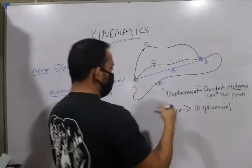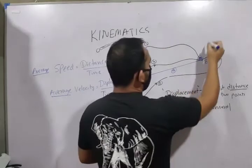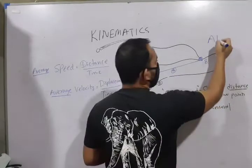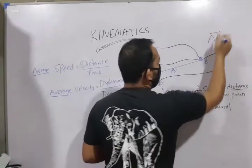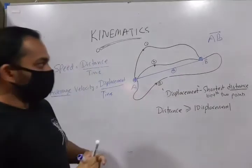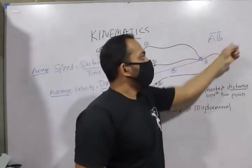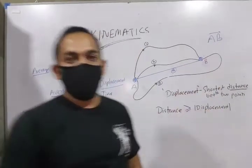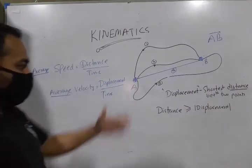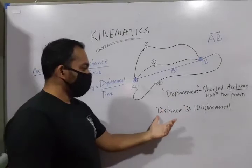Now, this displacement can be written in this way. If you are moving from A to B, you can put an arrowhead that says from A to B. So, displacement can be written in vectorial symbols as well. Okay.